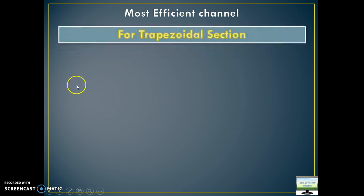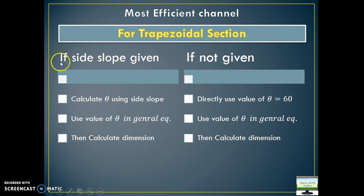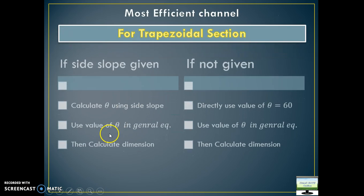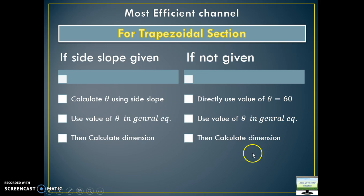Here is a summary for the most efficient trapezoidal channel section. If a side slope is given, first calculate θ using tan(θ) = vertical/horizontal, then use that θ in the general equation b = 2d × tan(θ/2) to find the relationship between b and d and then calculate all dimensions. If no side slope is given, directly use θ = 60° in the general equation, which gives b = 2d/√3.